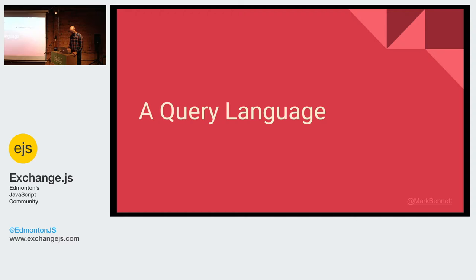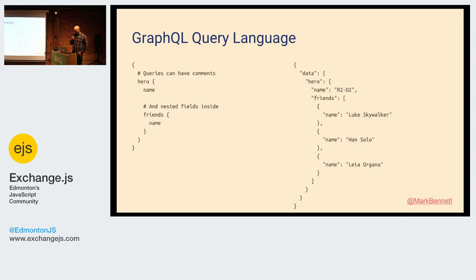As well as defining a schema, it also defines a query language. Here's the most basic example: you have a query where we're saying we'd like to retrieve a hero, we want a name, his set of friends, and their names. It really does just look like a JSON object where we have keys and no values at its most simple. If you run that, you get back a response with a field called data, and you can see it's almost just taken what's on the left, populated it, and sent it back to you on the right.